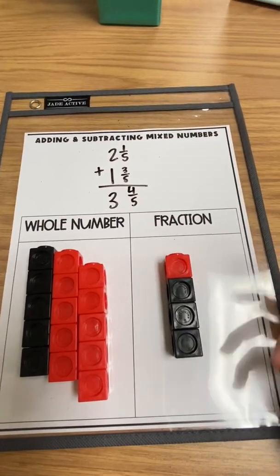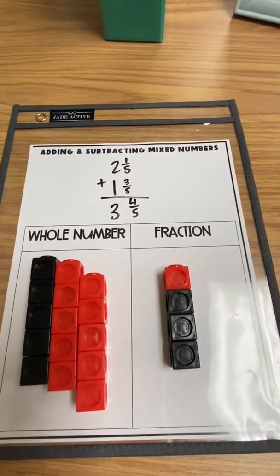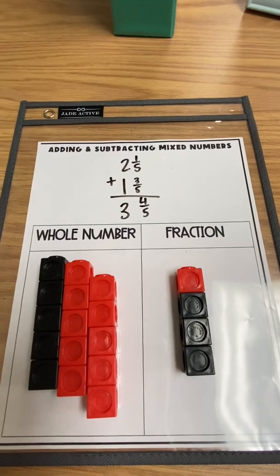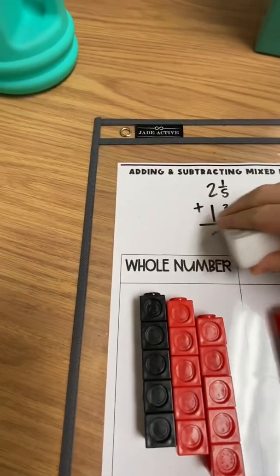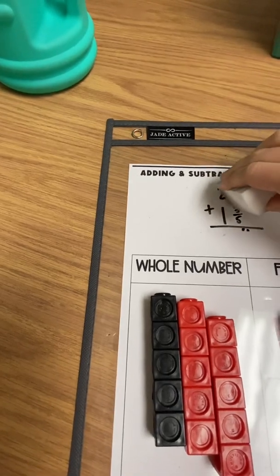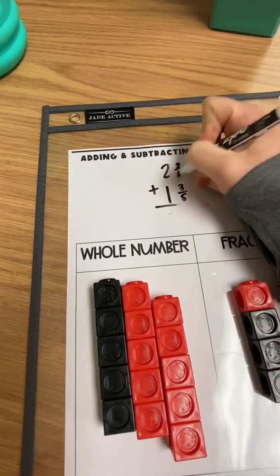Now this is typically a simple problem because there's no regrouping involved. But when we get into problems that involve regrouping, it can be a little bit more challenging for our students. So let's say that instead of 2 and 1 5th, students had to solve 2 and 3 5ths.